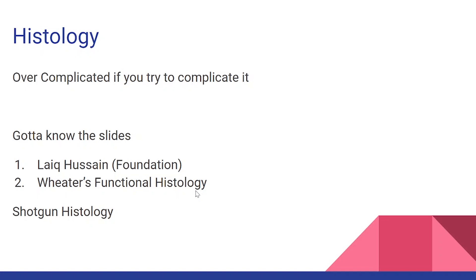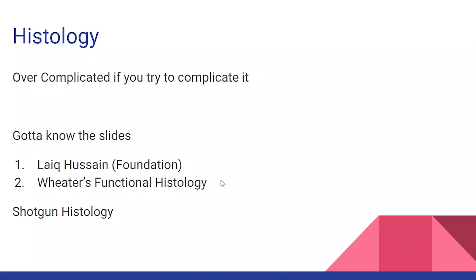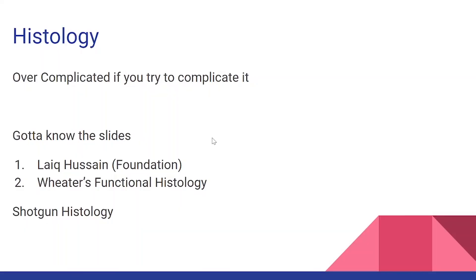The main textbook you usually get is either Junqueira or Wheater's. I would suggest Wheater's because it's a great textbook with so much detail and so many different slides — under electron microscope, normal microscope, light microscope — it really gives you a good idea of the slides. Once you start seeing them under the microscope, you'll realize they all look exactly the same, which is really annoying. So it's really about not overcomplicating it — it's an easy subject.